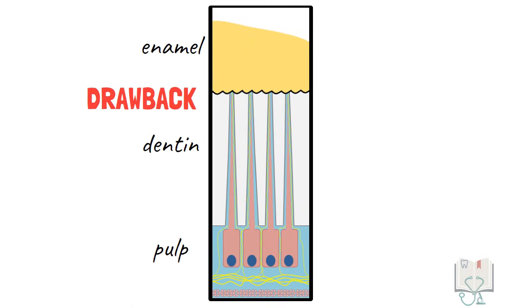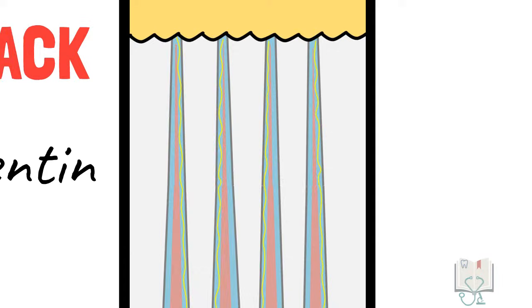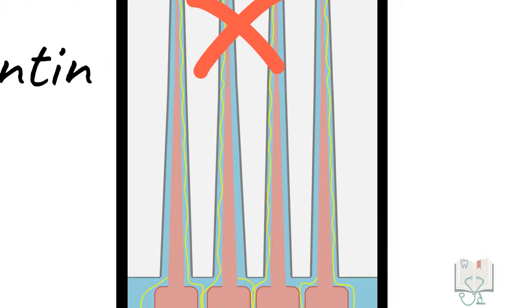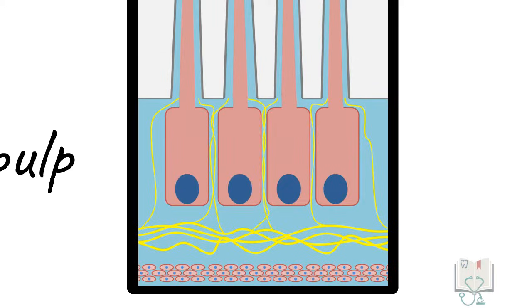The biggest drawback of this theory is the fact that pulpal nerves do not extend the whole length of dentinal tubules. They terminate at the level of odontoblasts or are limited to the inner part of dentin.